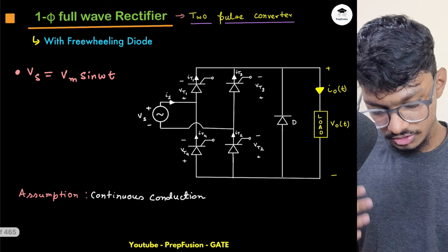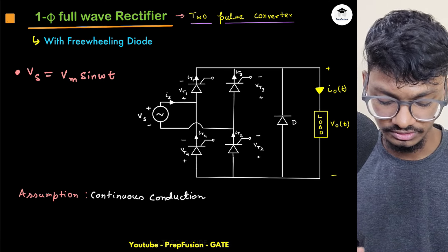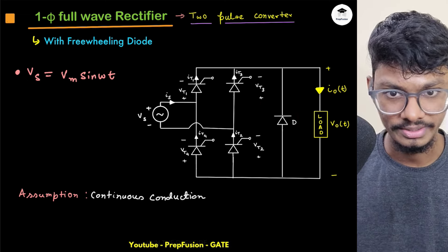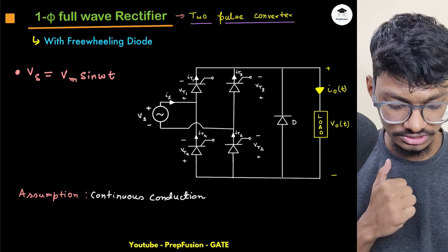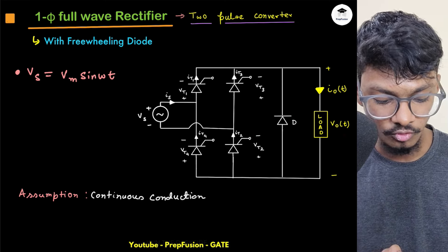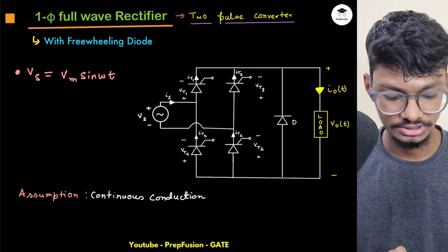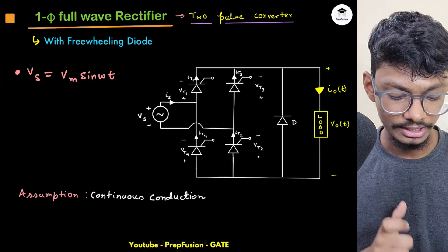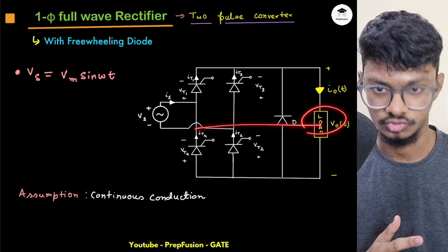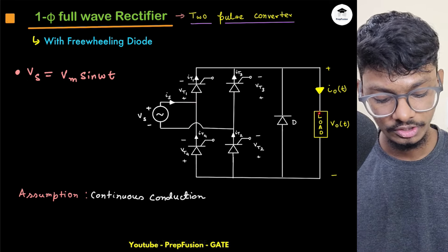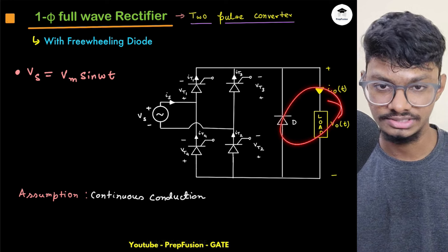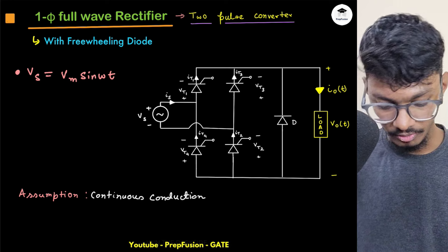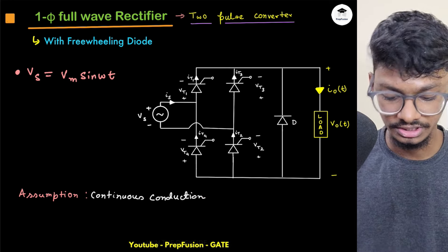First, let's talk about the full wave rectifier with a freewheeling diode. The freewheeling diode is an anti-parallel diode connected across the load. It is useful because with it, power can never flow from load to source — power will only flow from source to load and then discharge through the load itself. Our assumption will be continuous conduction mode.